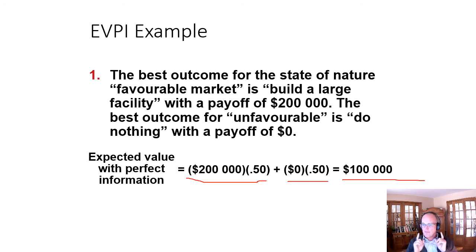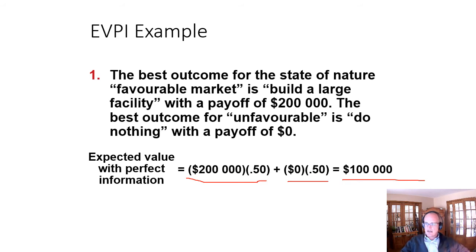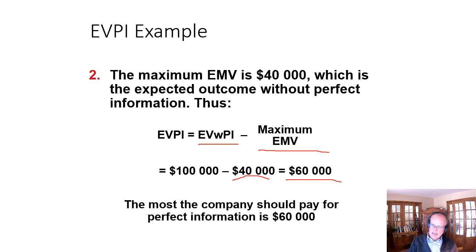If we knew for certain when making the decision whether we'd have a favorable or unfavorable market, the decision becomes easy: build a large plant if favorable, do nothing if unfavorable. The expected value of knowing exactly what's going to happen is $100,000. We take the expected value with perfect information ($100,000) and subtract the maximum expected monetary value we calculated ($40,000), giving us an expected value of perfect information of $60,000. So we would be willing to pay up to $60,000 to remove any uncertainty from the decision-making process.